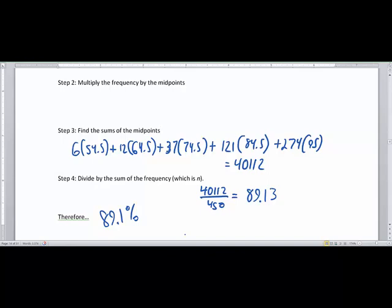So this is the process if you are given a frequency table and not the specific data. This is how you can find the average pretty easily with a little organization.